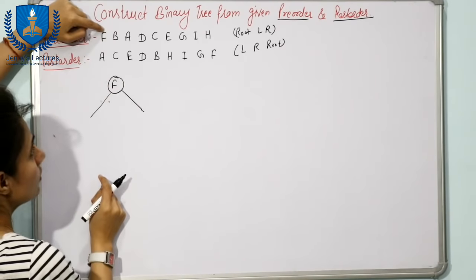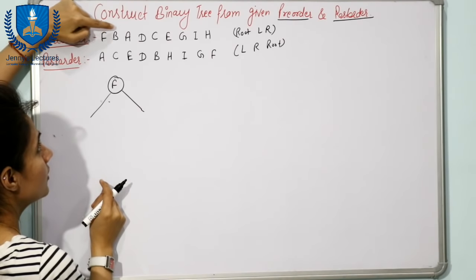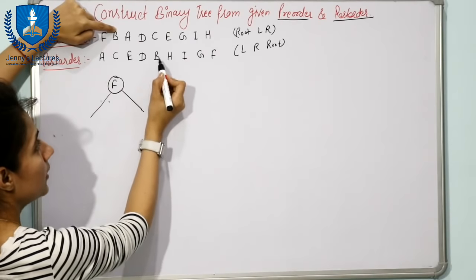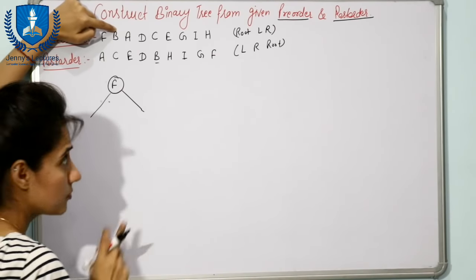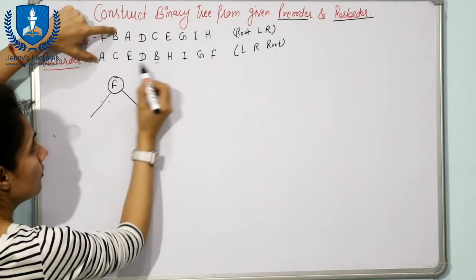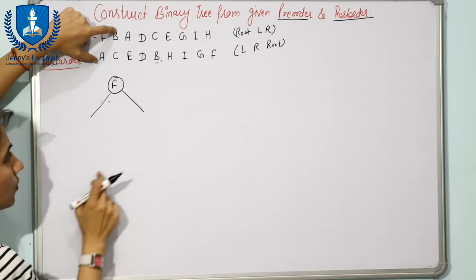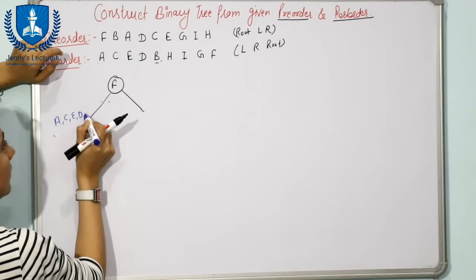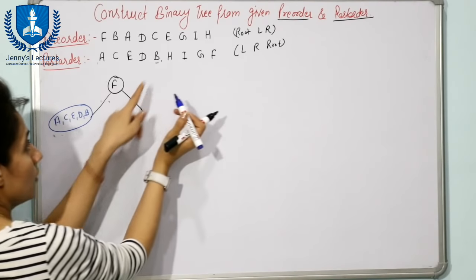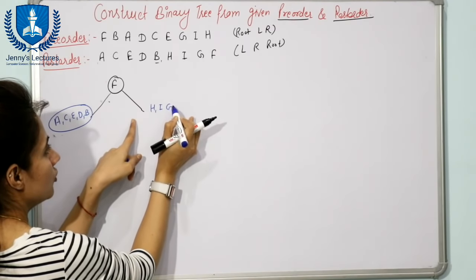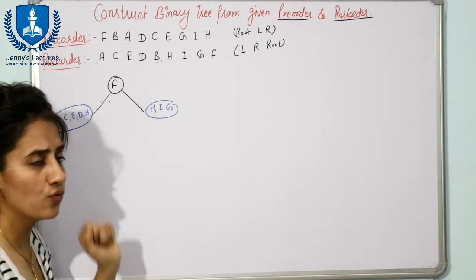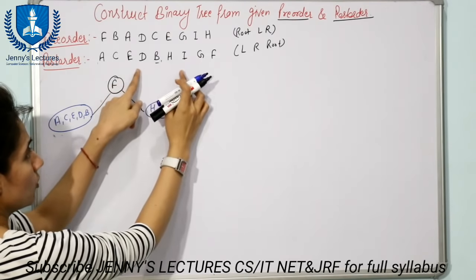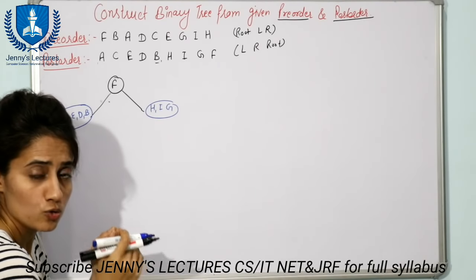Now find the left and right subtree of F. Check the successor of root F in pre-order - that is B. Find where B is in the post-order traversal. All elements from the start of post-order up to and including B are elements of the left subtree: A, C, E, D, and B. The remaining elements H, I, G (F already taken as root) are elements of the right subtree. The problem has now been divided into two sub-problems.